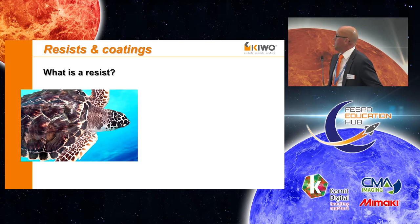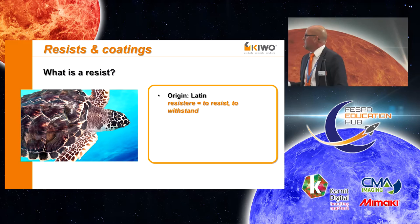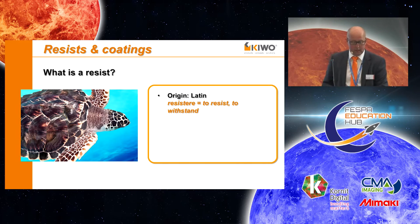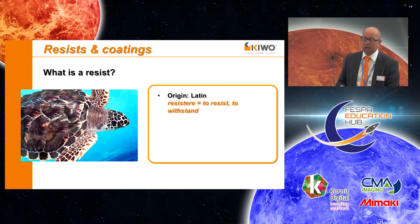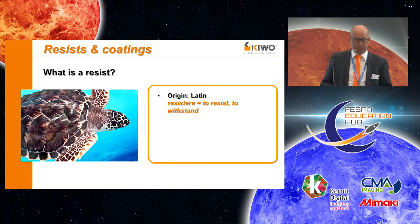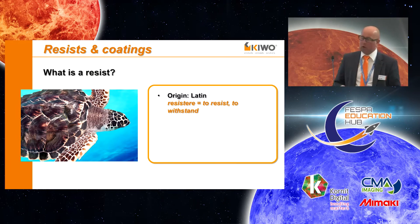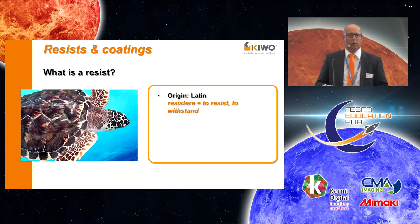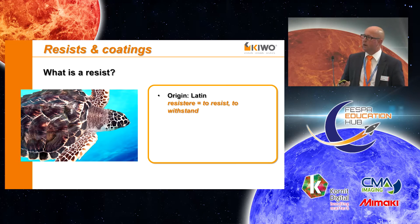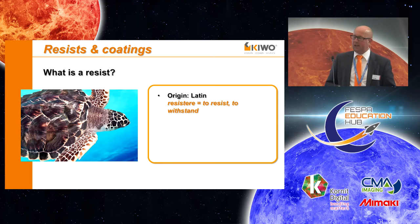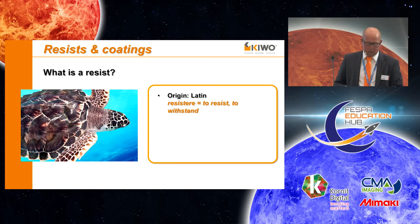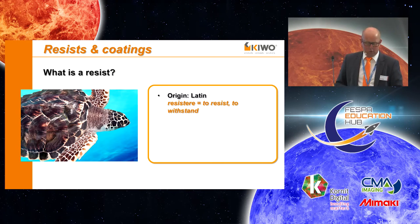The first question is: what is a Resist? The origin comes from Latin. Our definition: Kivo Resists and Codings are high or medium viscosity coating medias for all-over or partial coating of surfaces. The coated areas protect the surface during further working steps like cutting, drilling, punching, or further surface treatment like sandblasting, brushing, etching, or some coating processes — or simply as a transport protection. The resist can be easily removed either by peeling or with a special cleaning chemical.